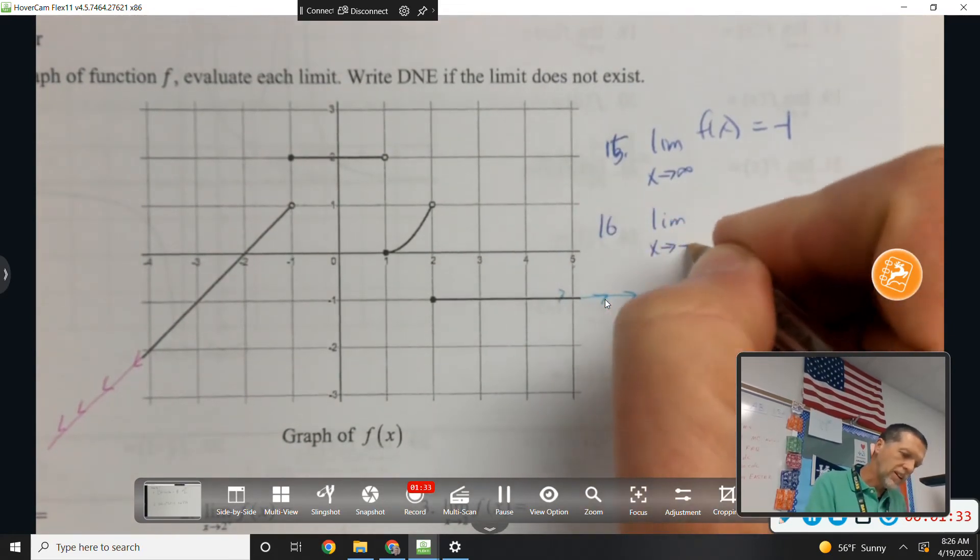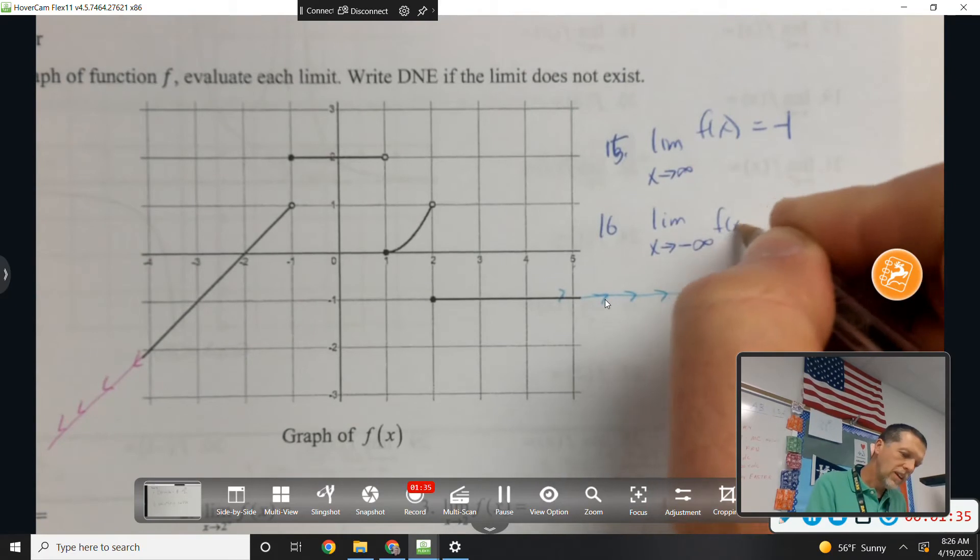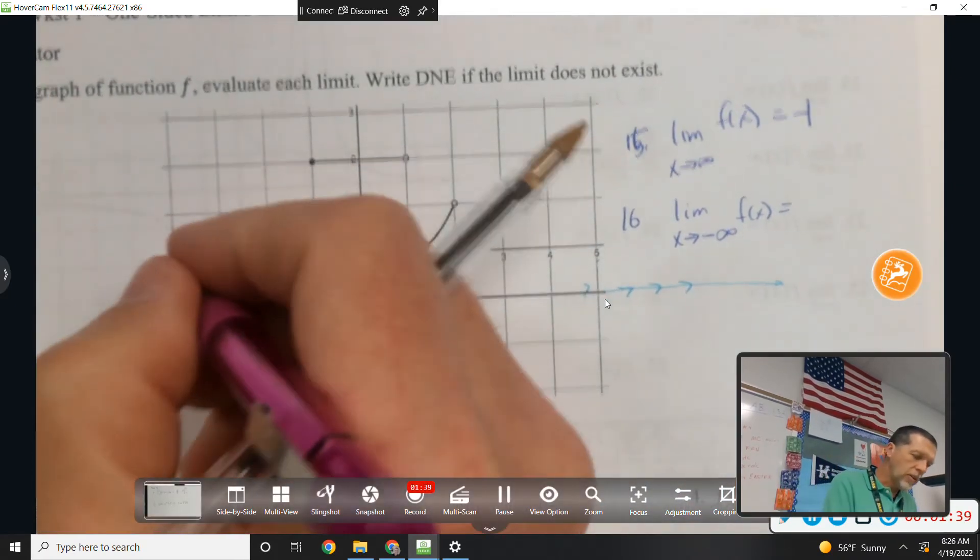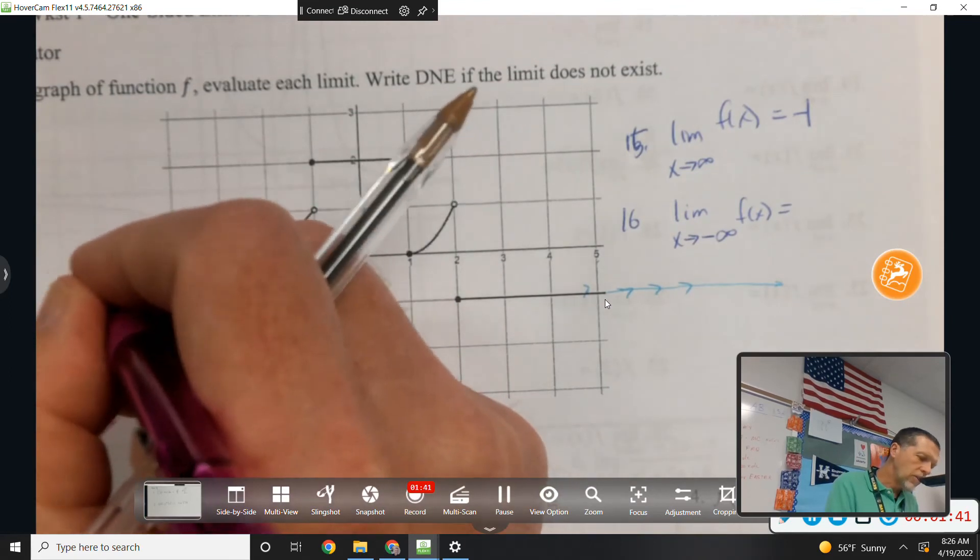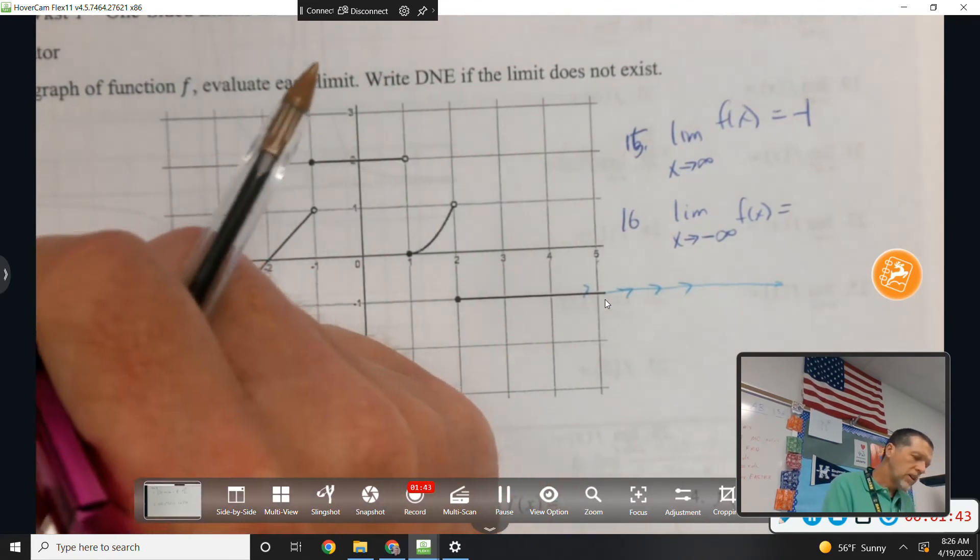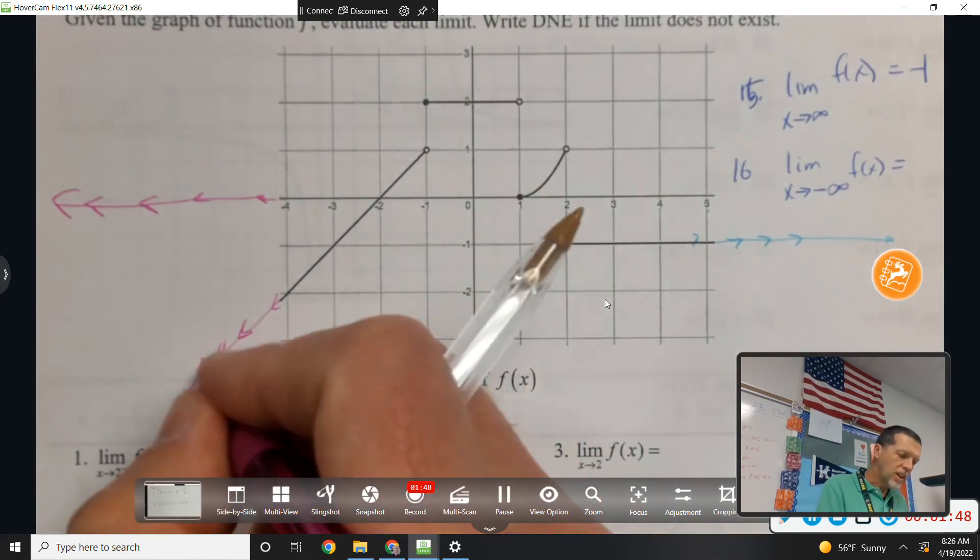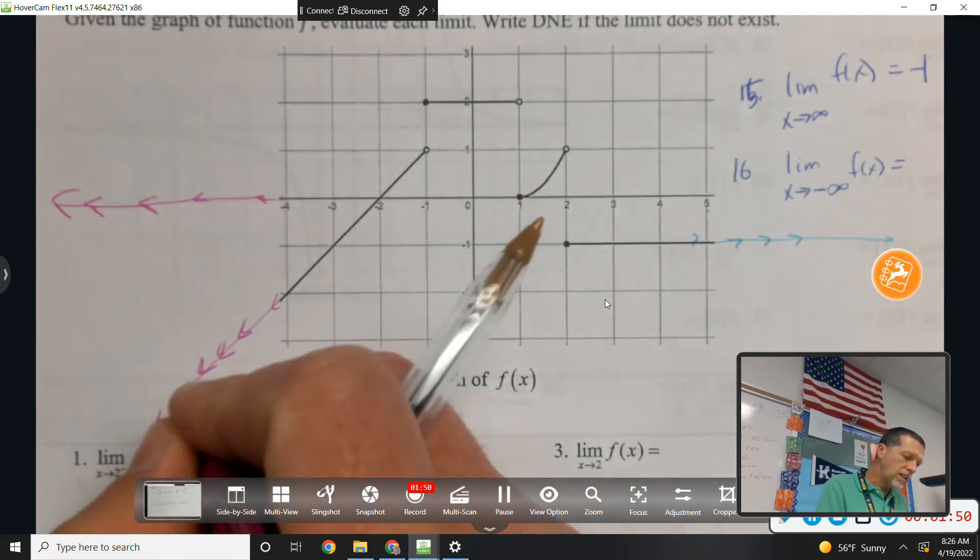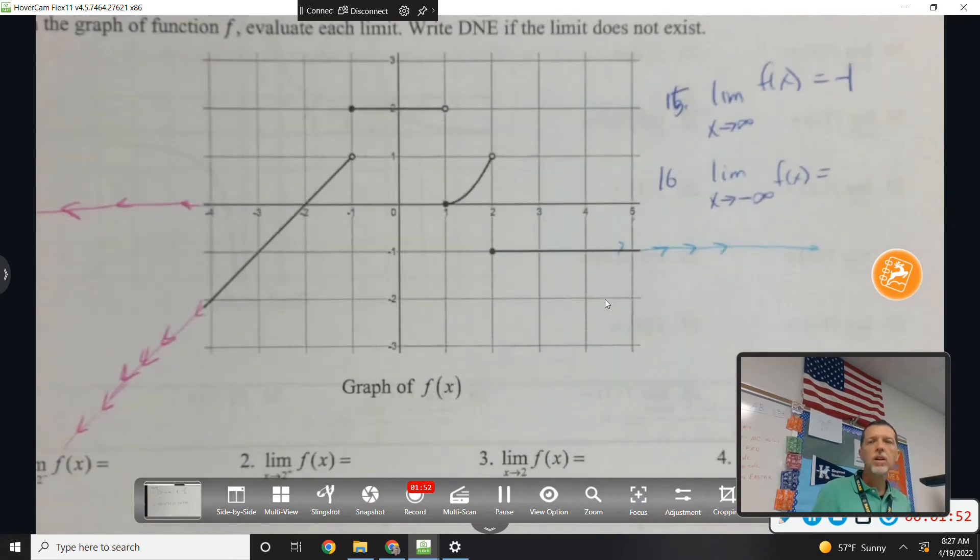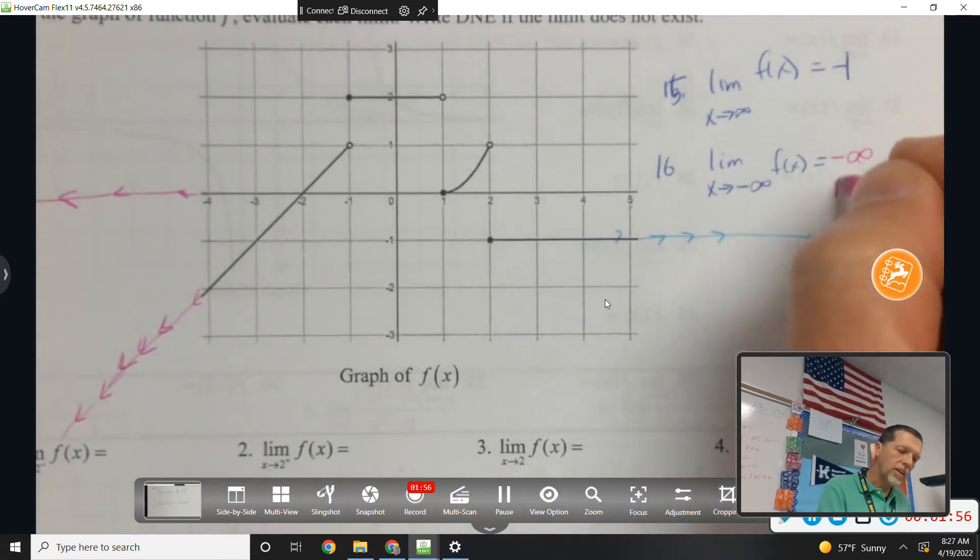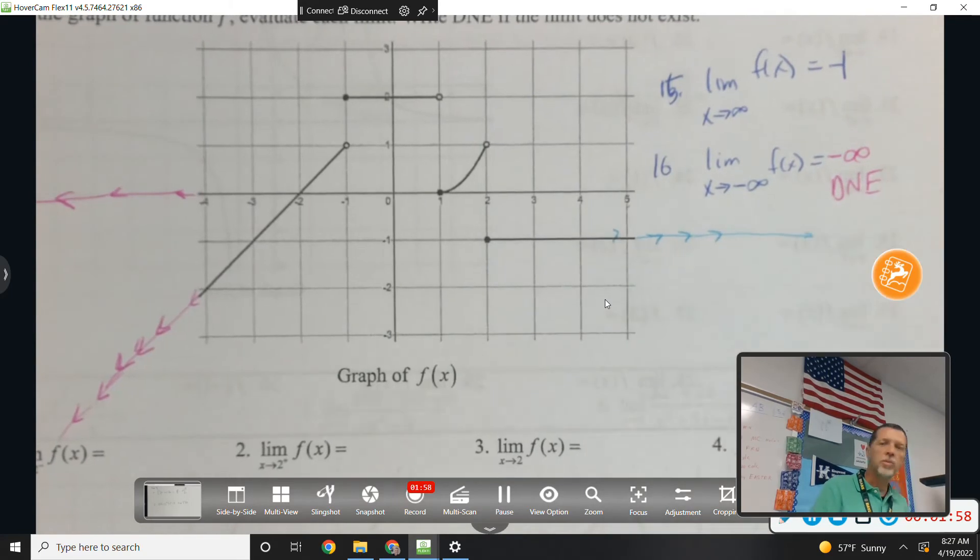16 is negative infinity. So that's a little bit harder. So as x goes further and further out to the left toward negative infinity, the function is headed down, down, down toward negative infinity,